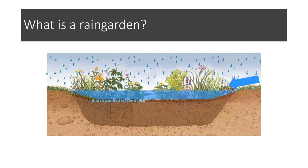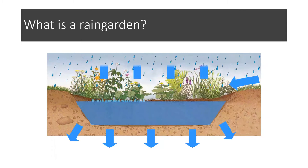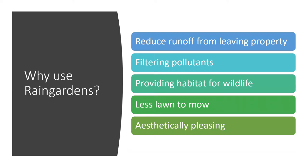That's how they're designed, so there's no concern about mosquitoes breeding. The water infiltrates into the ground, the plants take up some of that water, some goes into the groundwater, and some is evaporated through the plants. One of the main reasons we like to incorporate rain gardens is that it helps reduce runoff from leaving the property. It also helps filter pollutants — the plants take up excess nutrients from that water instead of having it run off into storm drains and surface waters.